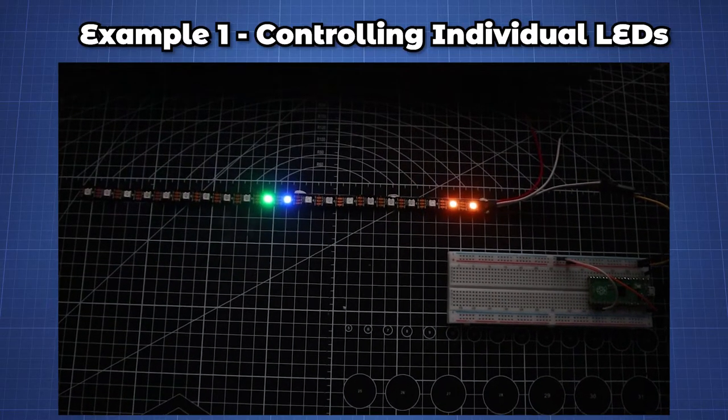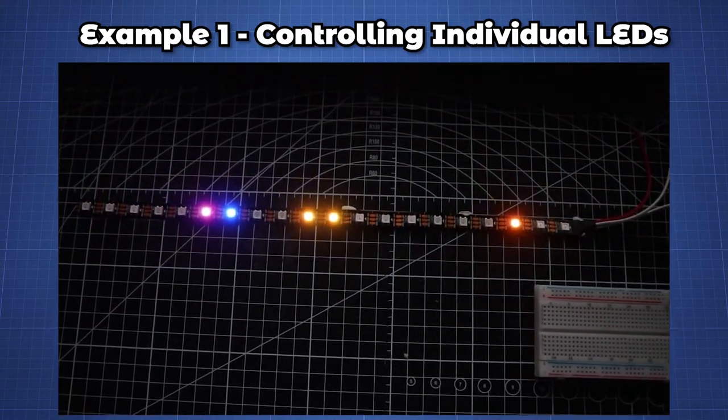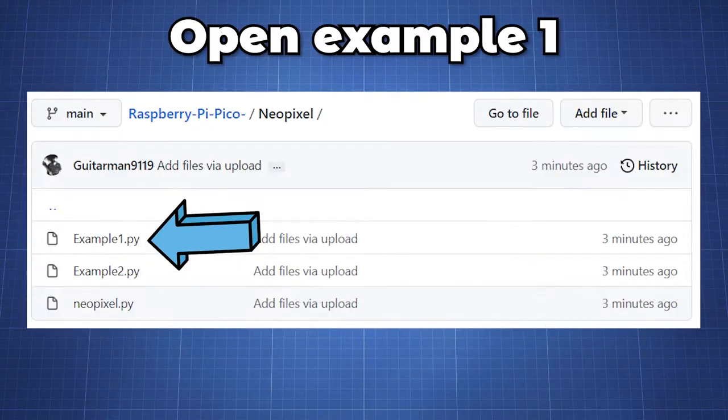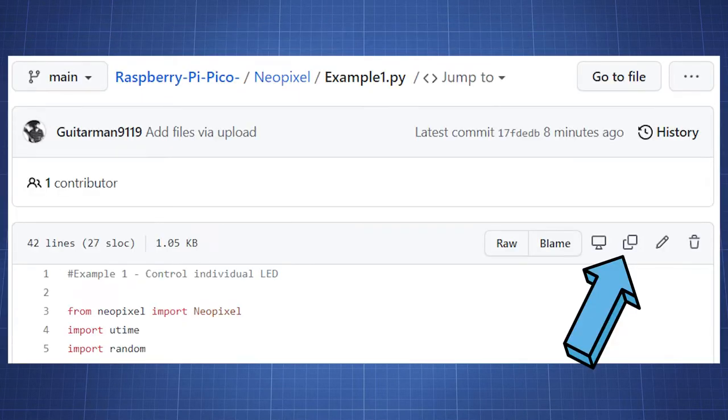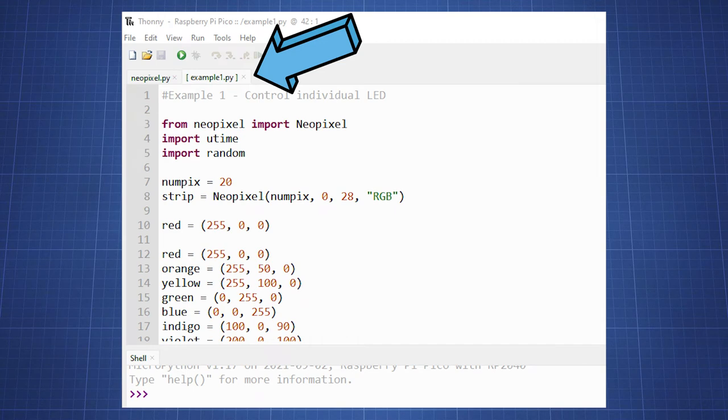In our first example we will look at controlling the LEDs individually. Go to my GitHub page linked down below, copy the code under example 1 and make a new file in Thonny and paste.